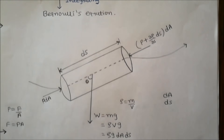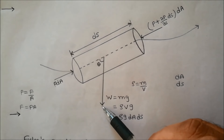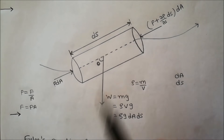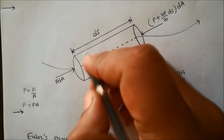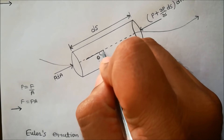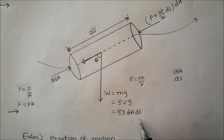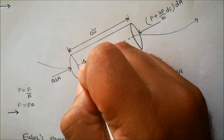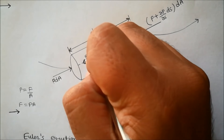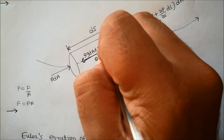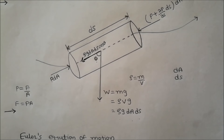Let theta be the angle between the weight of the fluid element and the direction of flow. The component of the weight force along the direction of flow is ρ·g·dA·dS·cos θ.